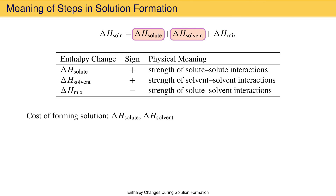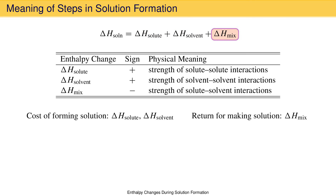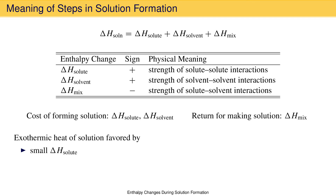Delta H solute and delta H solvent can be thought of as the price paid for solution formation because they require an energy input to overcome or break interactions. These are the things working against solution formation because they constrain particle motion, preventing dispersal. On the other hand, delta H mix is the payment received for making the solution because energy is released — it works in favor of solution formation. Exothermic solution formation is therefore favored with small values of delta H solute and delta H solvent and a large negative value for delta H mix, meaning solute-solute and solvent-solvent interactions are weak and solute-solvent interactions are strong. Basically, the costs are low and the returns are high.